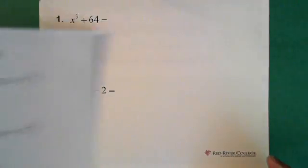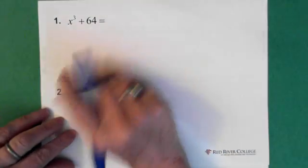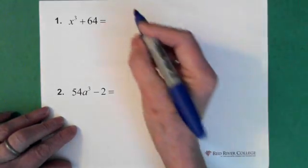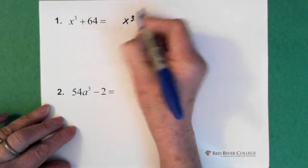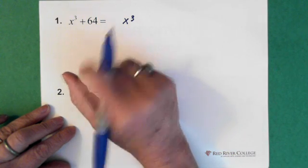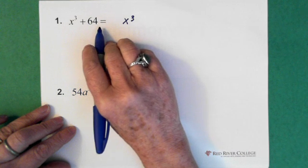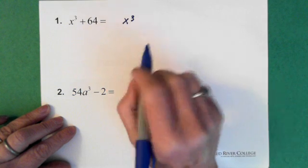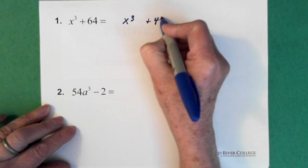Now let's take a look at the first question. We have to figure out what has been cubed. It's obvious we have x cubed, and 64. Sometimes these numbers are hard to figure out, but we just pull out our calculator. 2 cubed is 8, 3 cubed is 27, 4 cubed is 64. So this becomes x cubed plus 4 cubed.